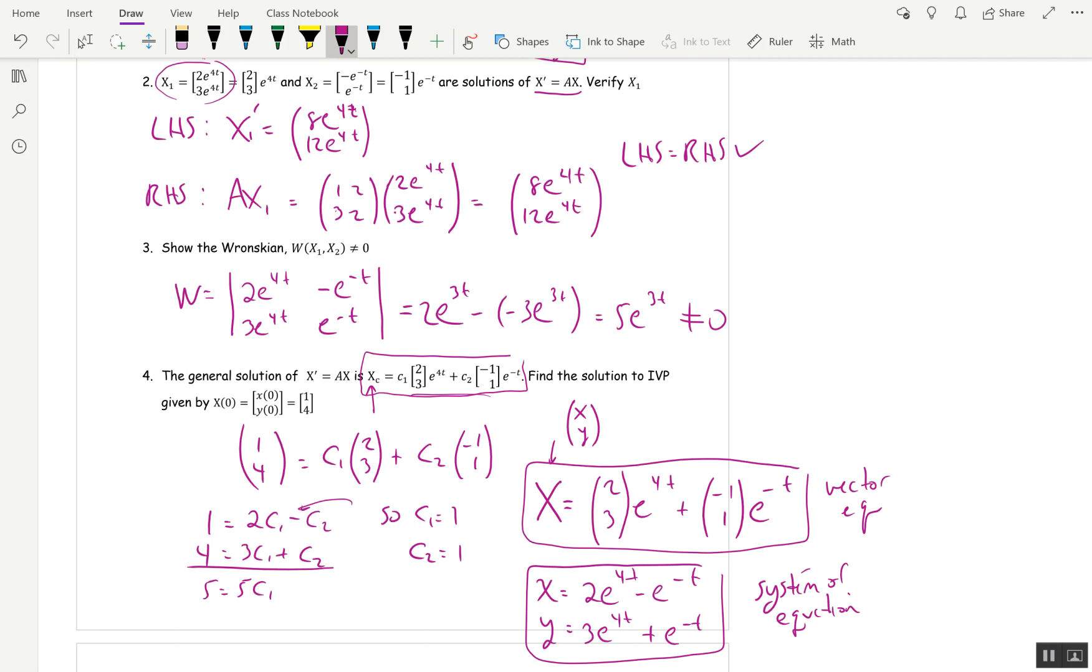In the next video, we're going to actually see how to find this. Where do we come up with (2, 3)e^(4t)? Where do we come up with (-1, 1)e^(-t)? We'll see you there.